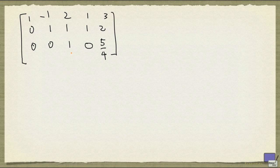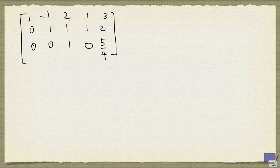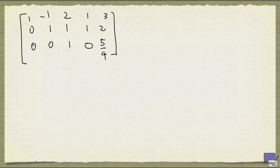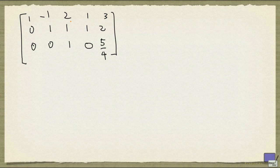So what we need to do next is, for each leading one, we need to make sure that the other entries in the same column are all 0. So for example, I need to make sure that this entry here becomes 0 and this entry here becomes 0. And I'm going to do that by adding minus 2 times row 3 to row 1 and add minus row 3 to row 2.